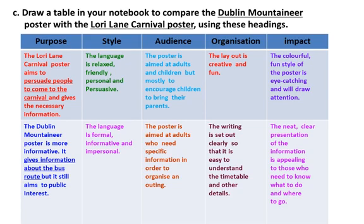Moving to style: the Carnival poster language is relaxed, friendly, personal, and persuasive, but in the Dublin Mounir poster, the language is formal, informative, and impersonal. Audience: the first poster is aimed at adults and children, mostly to encourage children to bring their parents. The second poster is aimed at adults who need specific information to organize an outing. Organization: the Carnival layout is creative and fun. The Dublin Mounir poster writing is set out clearly so that it is easy to understand the timetable and other details. Impact: the colorful, fun style of the Carnival poster is eye-catching and will draw attention. The Dublin Mounir poster's neat, clear presentation of information is appealing to those who need to know what to do and where to go. Children, go through this slide and read it again.